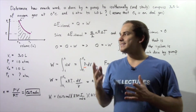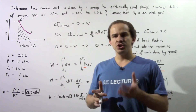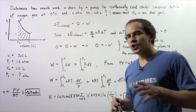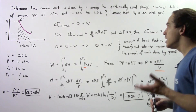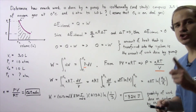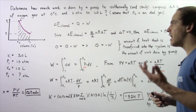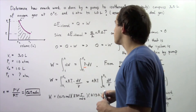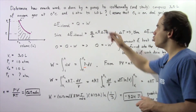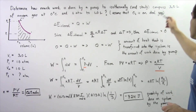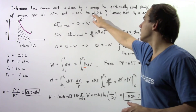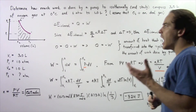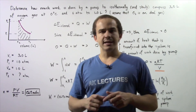Let's examine the following example using the first law of thermodynamics. Determine how much work is done by a pump to isothermically and slowly compress 3 liters of oxygen gas at 0 degrees Celsius and 1 atmospheric pressure to a volume of 1 liter. We go from a volume of 3 liters to 1 liter isothermically. Assume that our oxygen gas is a diatomic ideal gas.